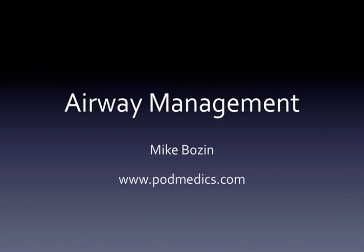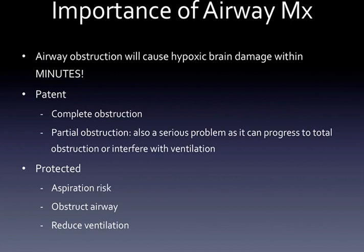So why is the airway important? If we think about the ABCDEs in the primary survey, airway is right at the top of the list. This is because airway obstruction will cause hypoxic brain damage within minutes, and if this persists it will lead on to irreversible brain damage and death.